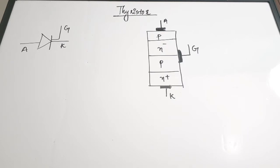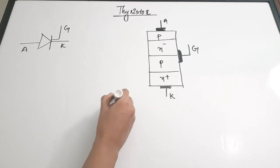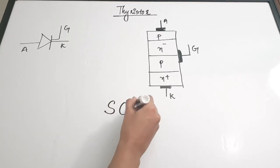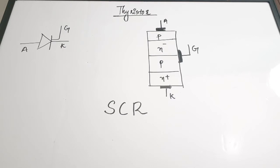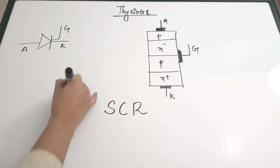Under the name thyristor, the device is the SCR — Silicon Controlled Rectifier. It is a silicon component, made up of silicon, and that is why it is called a silicon controlled rectifier. It is a rectifier, meaning it is a unidirectional switch, just like all diodes are unidirectional switches.